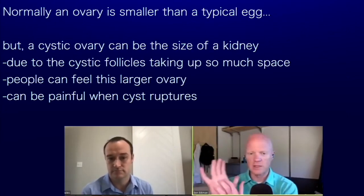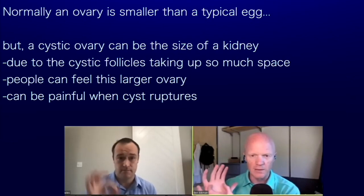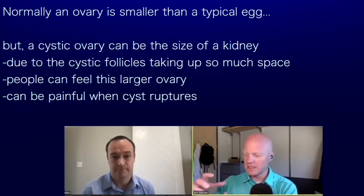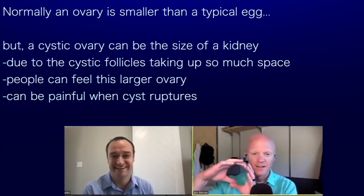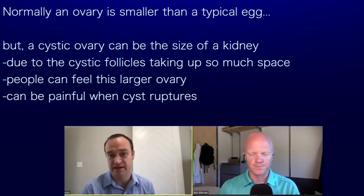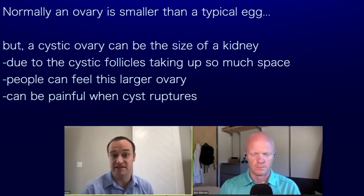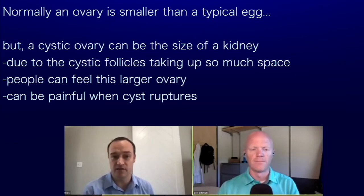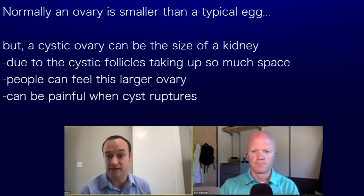Normally, the ovary is quite small — it fits in the palm of a hand, roughly the size of a small egg. But a cystic ovary can grow almost to the size of a kidney. That's just the physics of follicles taking up more space, and the stretch of the ovary can definitely be felt. Sometimes people have a ruptured cyst, which can be painful, and often people go to the emergency room for that. Sometimes people can even feel ovulation itself.